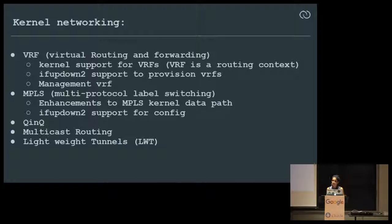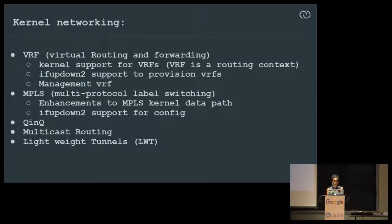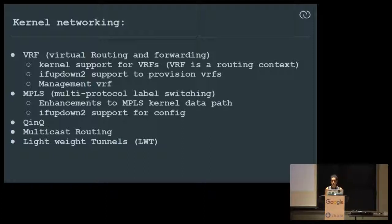Some Linux networking features are particularly important to us. VRF — Virtual Routing and Forwarding instance — is like a VLAN for L3 or for your IP addresses, providing IP address isolation. It is a very important feature in a network operating system.